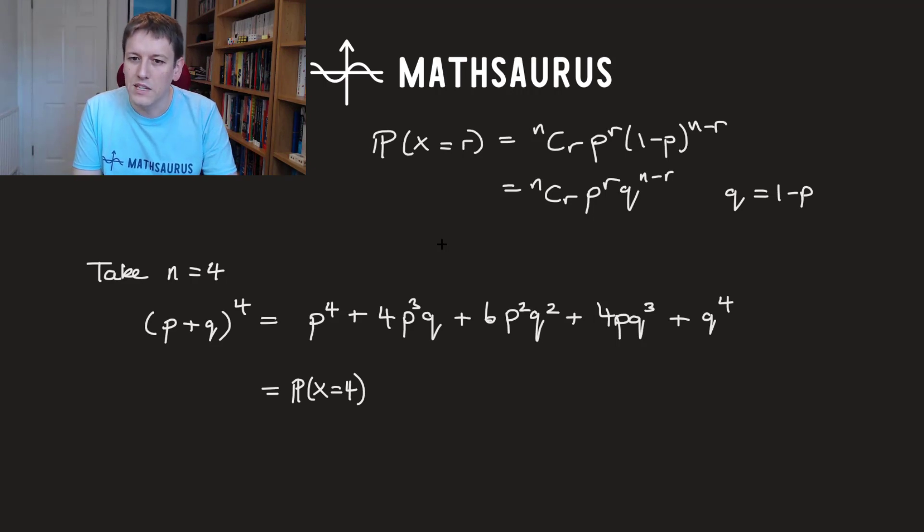Right, similarly this 4p cubed q, that's 4 choose 3 times p to the 3 times q to the 1. So this is the probability that X equals 3. And you can check that the same is true for each of these other terms. So this is the probability that X equals 2, this is the probability that X equals 1, and this is the probability that X equals 0.